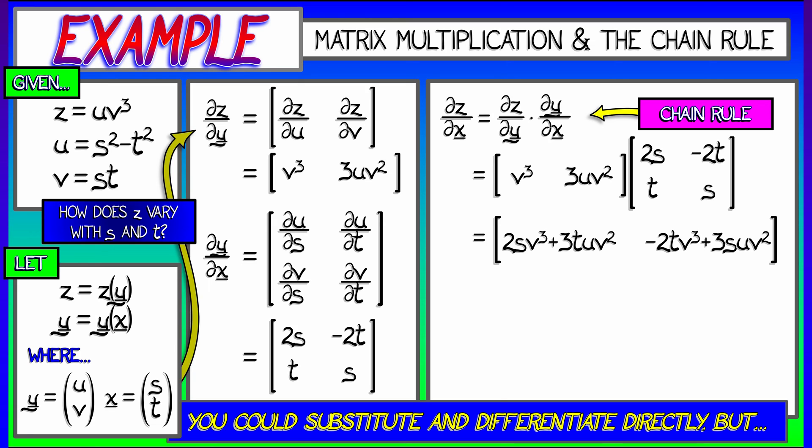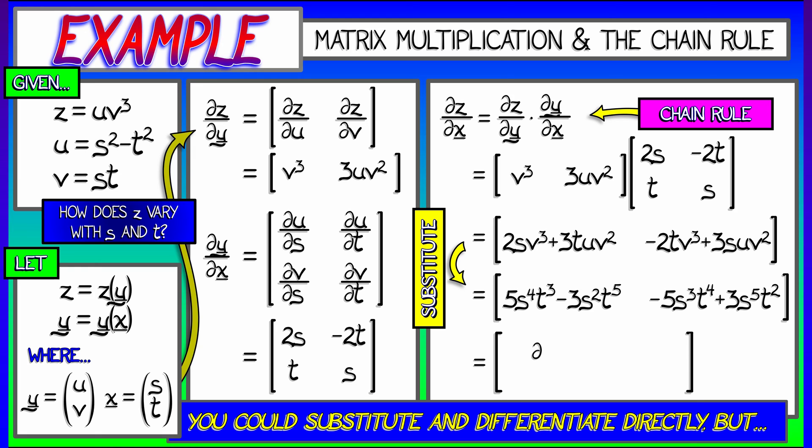Now that's not the final form we want it in. We want to substitute in the s and t variables for u and v. With a little bit of algebra, we get our final answer in terms of s and t.